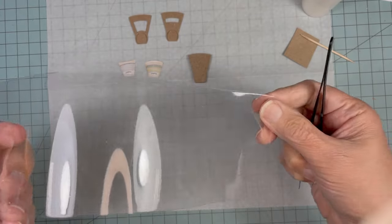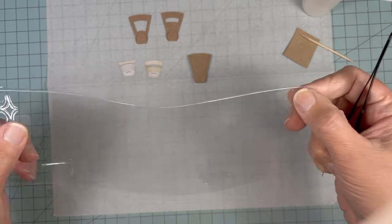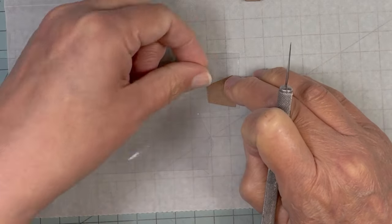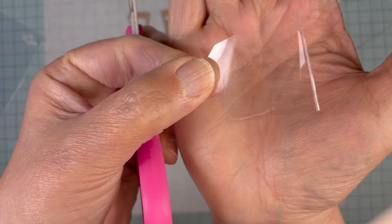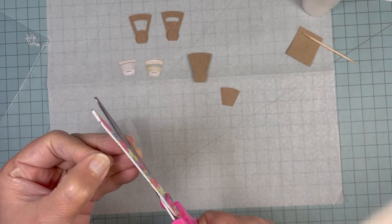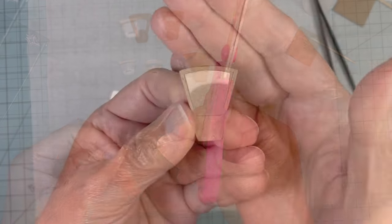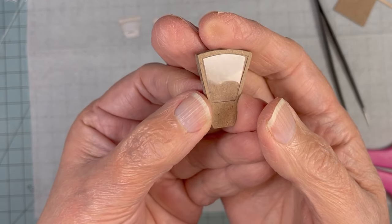I used thin clear packaging to create the little window. I created a template and now I'm tracing it onto the packaging. And this is how it sits into that frame piece.